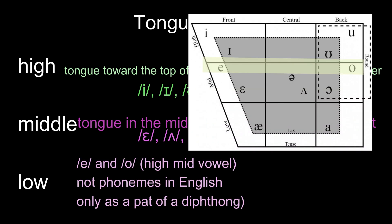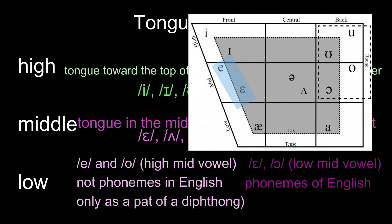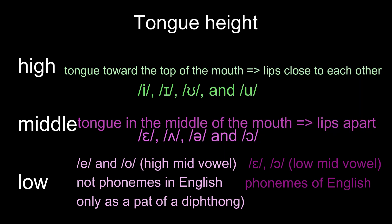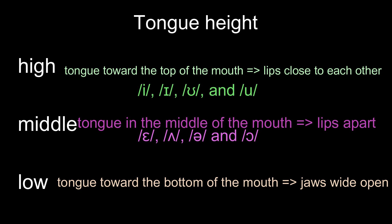Also occurring in the middle are E and U, which are the beginning sounds of diphthongs E and O. E and E are pronounced in proximity, but E occurs a little higher than E, so E is viewed as a high-medium vowel and E as a low-medium vowel. Likewise, O and O occur in proximity, but O occurs higher than O, so O is a high-medium vowel and O is a low-medium vowel. The low position of the tongue means that the tongue is farther down; the jaw should open wide. Low vowels are A and AH.